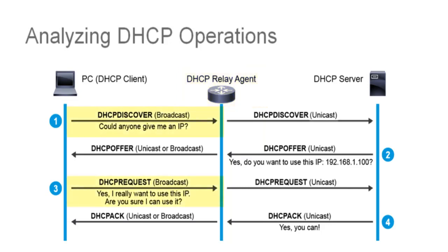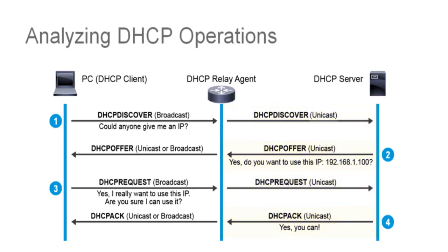When client DHCP messages are received by a router's relay agent, it generates new DHCP messages to send out on another interface to the remote DHCP server. This is also true for the DHCP replies from the server, which are then forwarded back to the client.